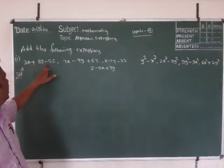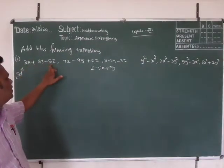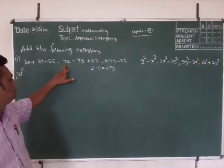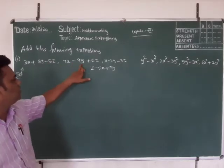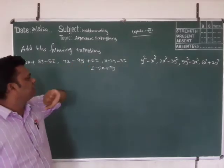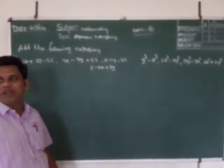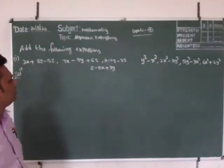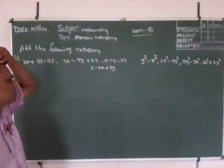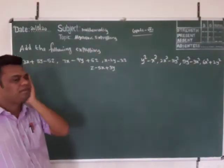So our first problem is: 3x plus 8y minus 5z, 7x minus 9y plus 6z, x minus 2y minus 3z, z minus 5x plus 3y.